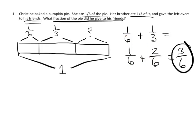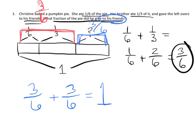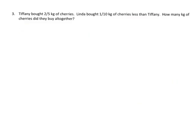At this point it's appropriate for students to start developing strategies for finding a common denominator — one more efficient than the area model, which would have given us a denominator of eighteen. Using common sense, one-sixth plus two-sixths equals three-sixths. That means the friends' piece is also three-sixths, because three-sixths plus three-sixths equals one whole. So the friends ate three-sixths of the pie, which equals one-half.